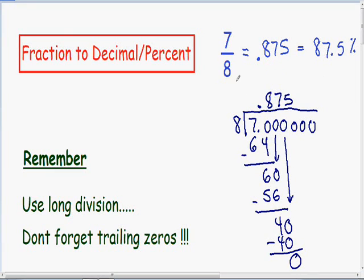So the fraction 7 over 8 as a decimal is 0.875 or 87.5 percent.